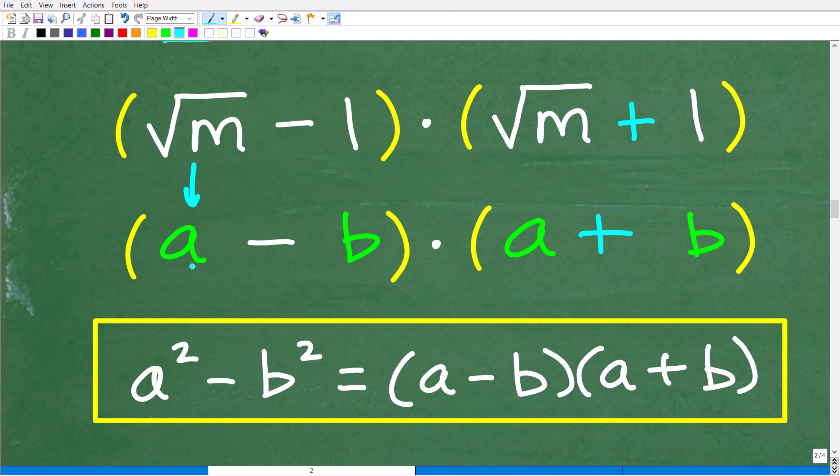In other words, the square root of m, if we think of that as the variable a, well, we have an a right here, and the square root of m is also right here as an a. Now, this is just a formula. It's just a value. So the square root of m, we can call that a. And here's the square root of m, we can call this a right here.